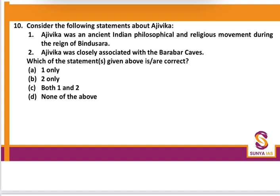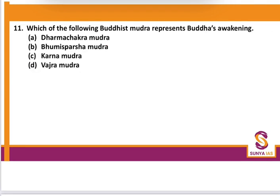Question 10: Statements about Ajivika. Statement 1 — Ajivika was an ancient Indian philosophical and religious movement during the reign of Bindusara: yes, during the Maurya period all sects coexisted. Statement 2 — Ajivika was closely associated with the Barabar Caves: correct. It was a heterodox school existing around the same time as Buddhism and Jainism. So C is the correct option.